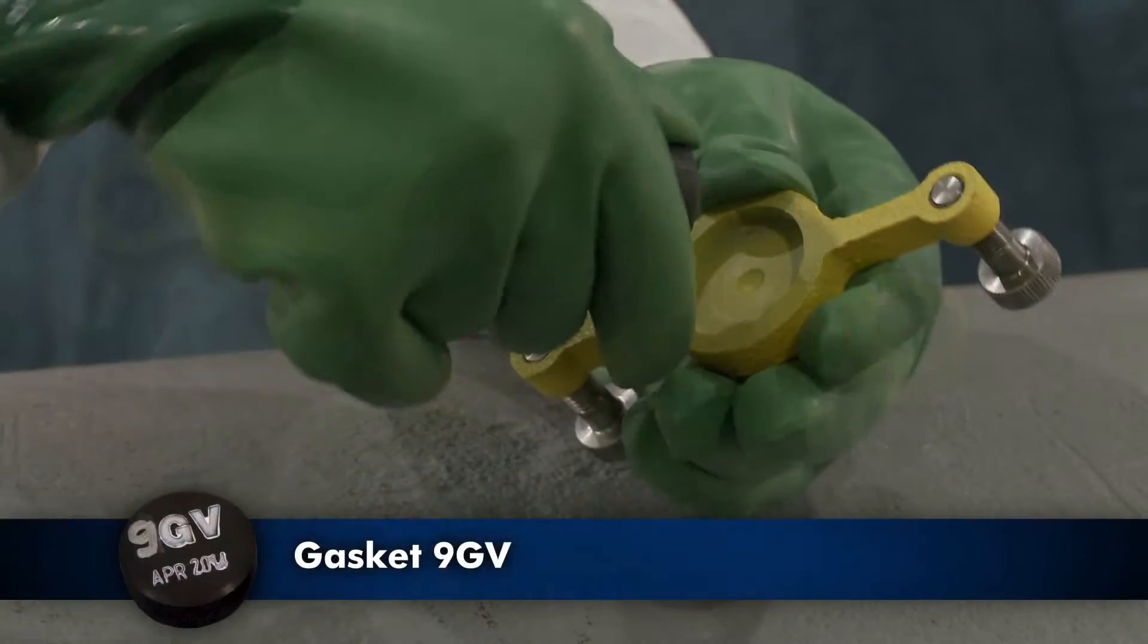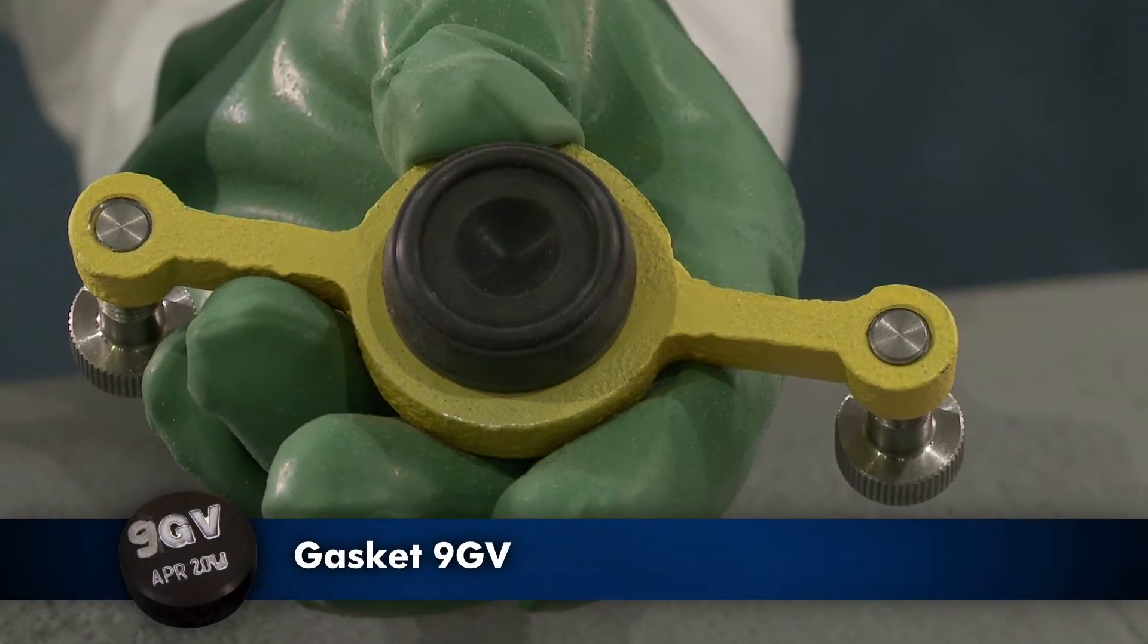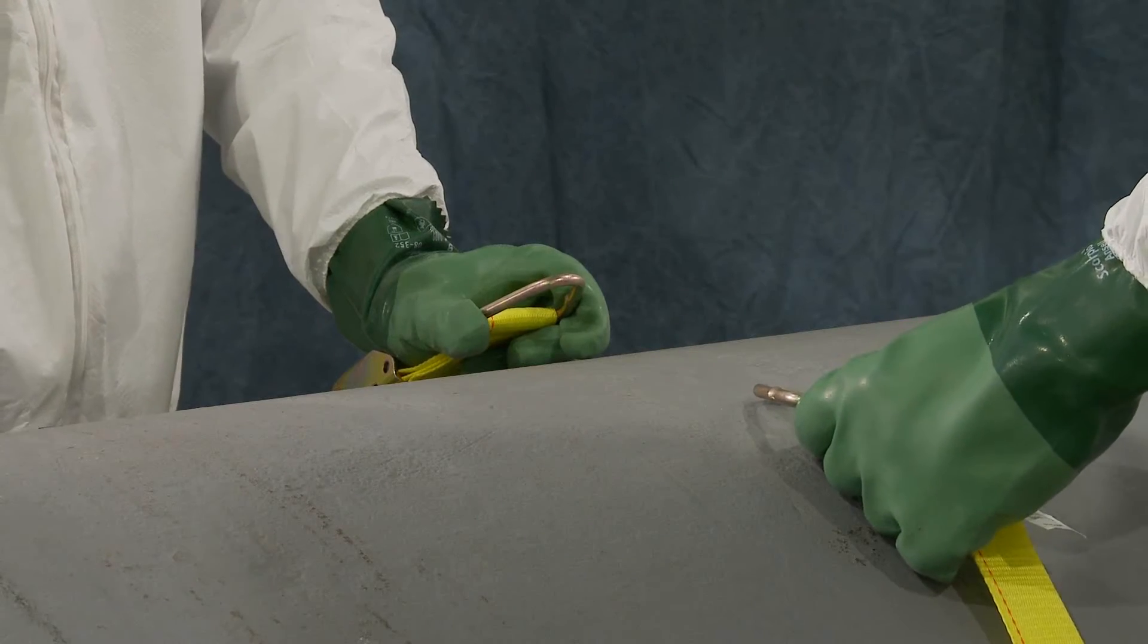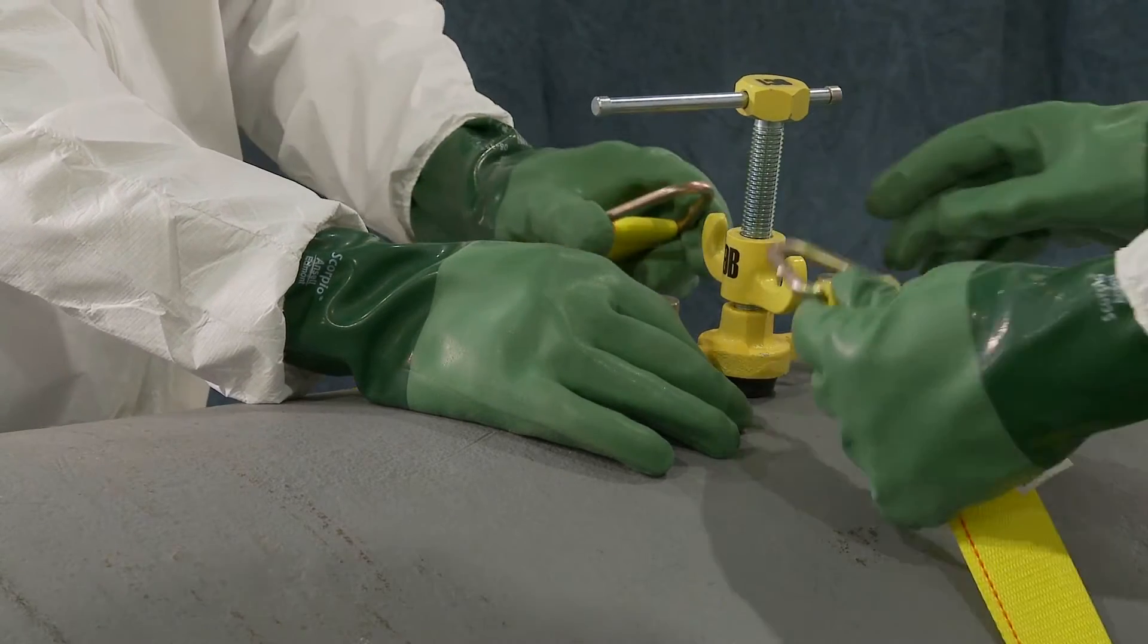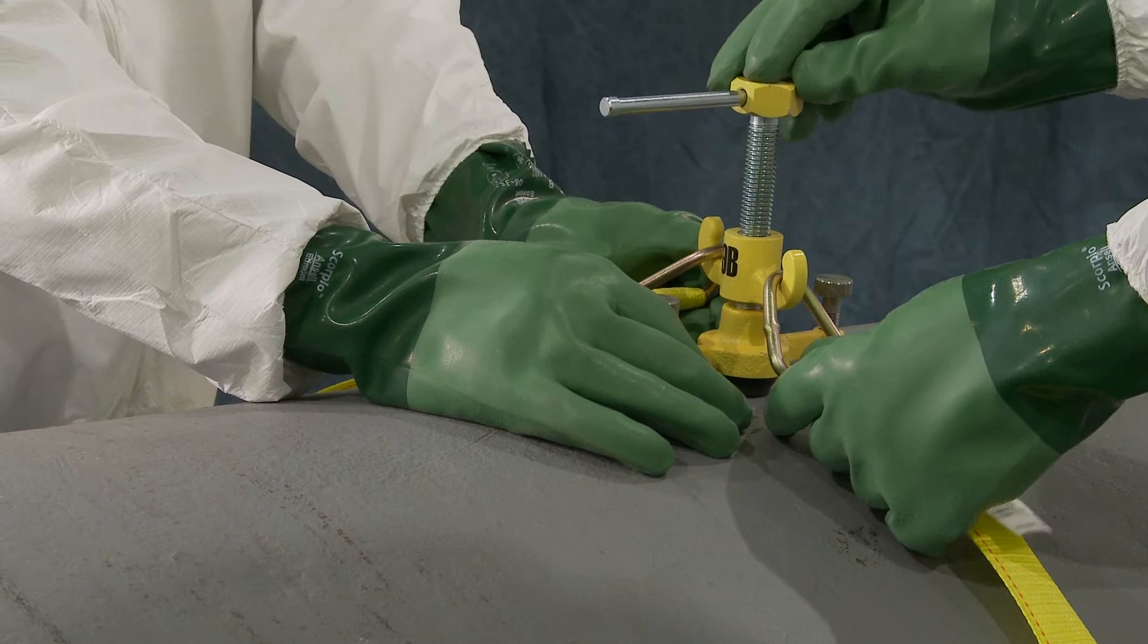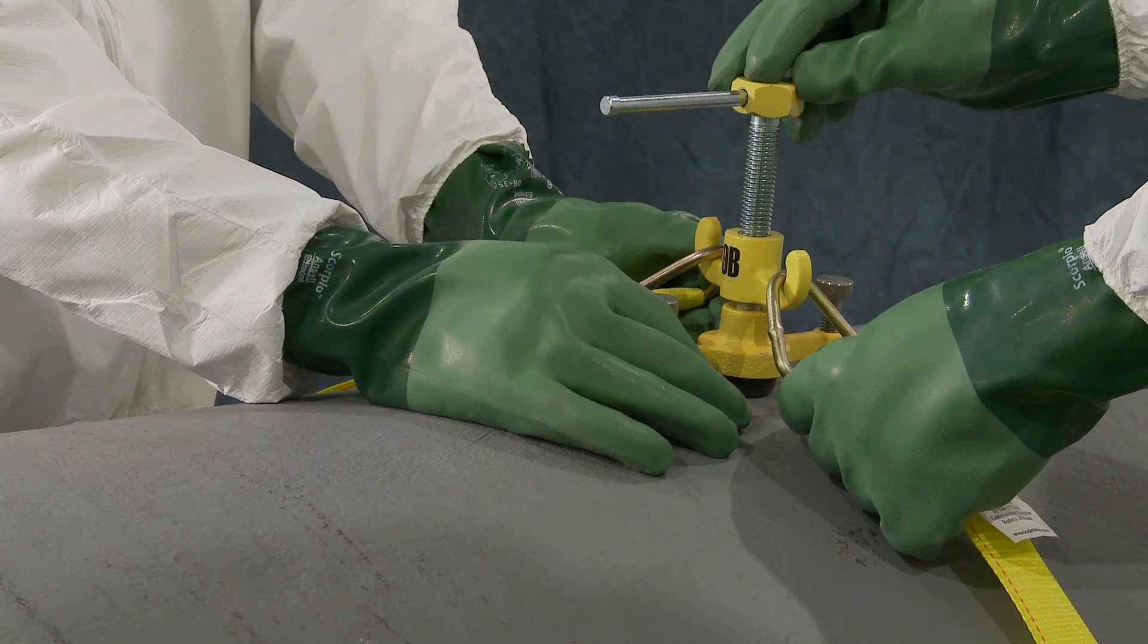Position the gasket 9GV inside the patch and set it to the side of the leak. Center the yoke and cap screw into the depression on the top of the patch. Hook the strap to an ear on each side of the yoke. Keep the strap as short as possible.